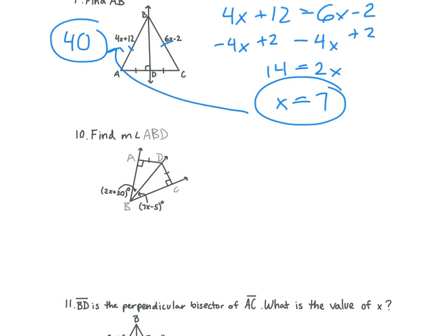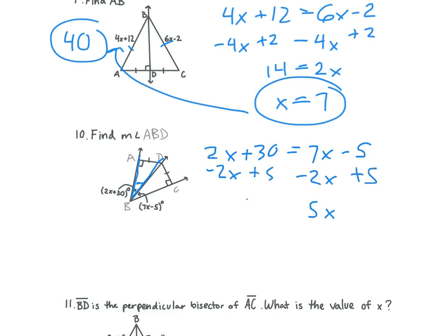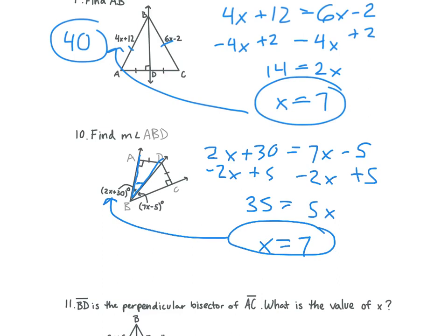Number 10 says find the measure of angle ABD. We set them equal to each other: 2X plus 30 is equal to 7X minus 5. We solve for X, getting 35 is equal to 5X, and X is equal to 7. We plug it back in and get the measure of angle ABD is 44 degrees.